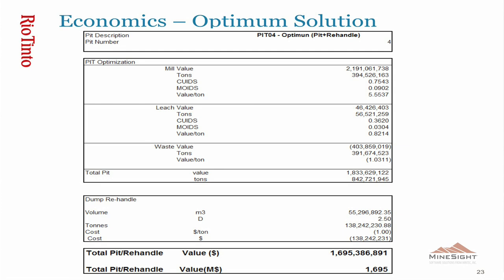Looking at the economics of this optimal solution: the mill value is $2.2 billion — slightly less reserves than solution one — the leach value is $46 million, and the waste cost is $403 million. The re-handle associated with this pit is $138 million. The total value of this project, including reserve mining and re-handle, is $1.7 billion.